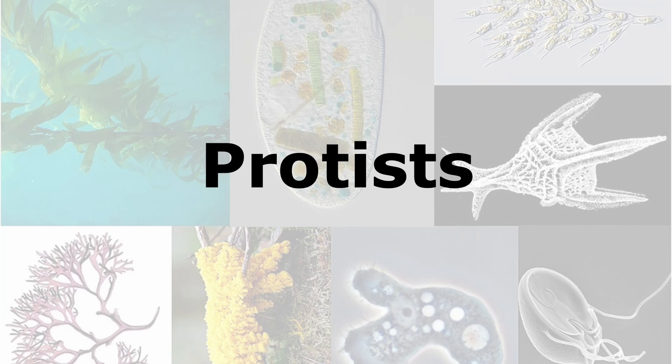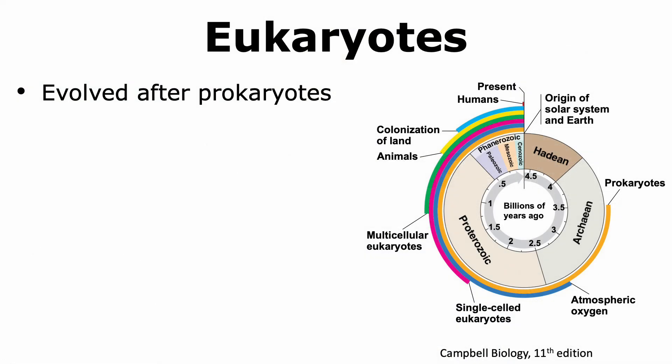In this talk, we are going to learn about the different features of protists, which are eukaryotic organisms. Eukaryotes are thought to have evolved after prokaryotes. According to the fossil record, we are able to detect single-celled eukaryotes around 2 billion years ago.